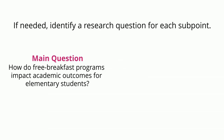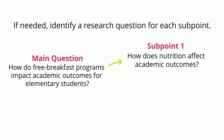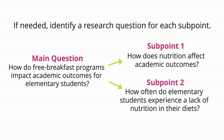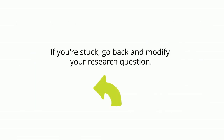If needed, identify a research question for each sub-point or argument that you plan to make in your essay. For example, if your research question is: how do free breakfast programs impact academic outcomes for elementary students? Your sub-point questions might be: how does nutrition affect academic outcomes? And how often do elementary students experience a lack of nutrition in their diets? Research questions are the springboard for your search for sources, so if you're getting stuck with your search, go back and modify your research questions.